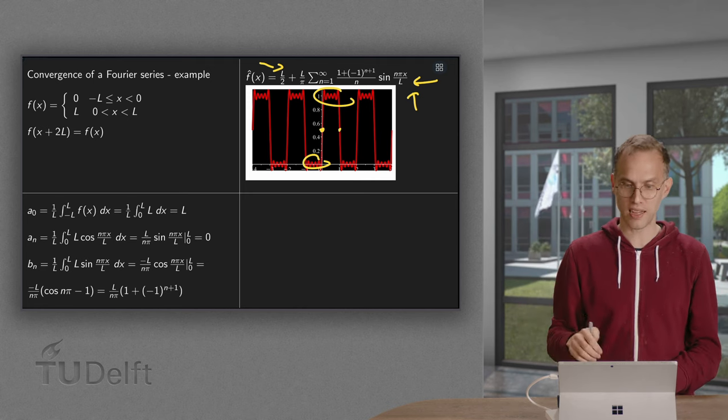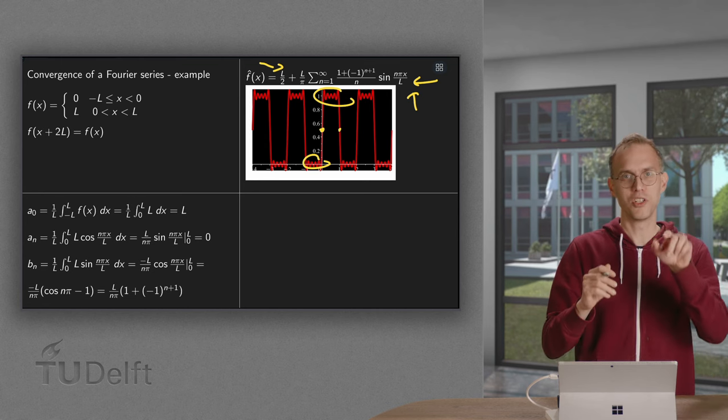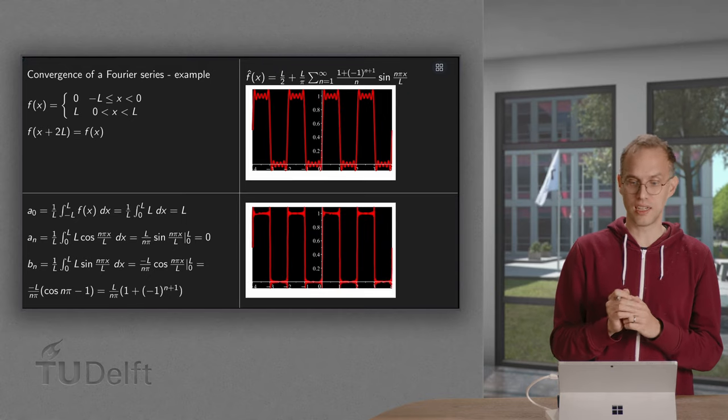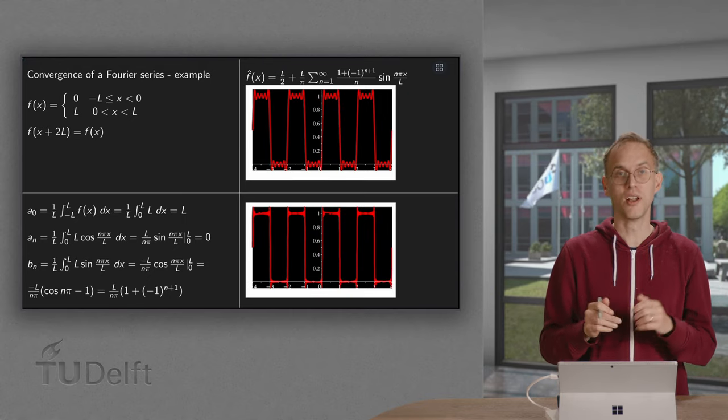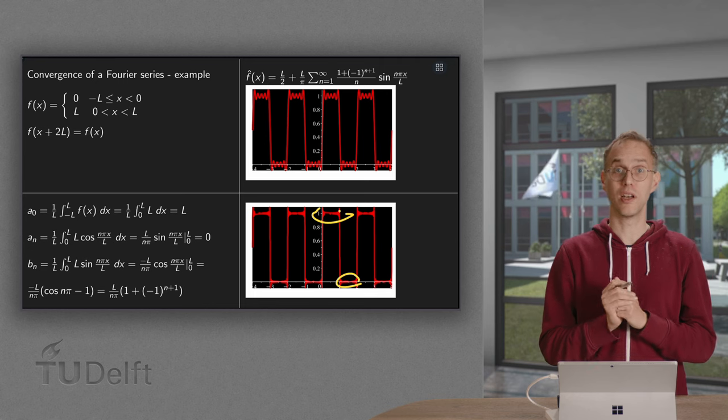Now let's see whether we can make a better approximation, because you see it's still quite wiggly, so do the same trick, but now take the first 50 coefficients, and you see it already gets a lot better, approximates a lot better.